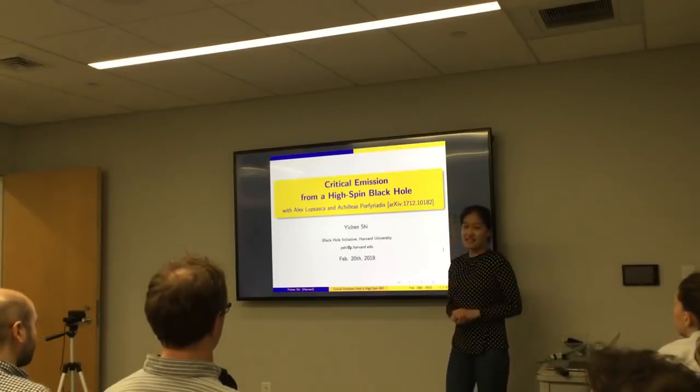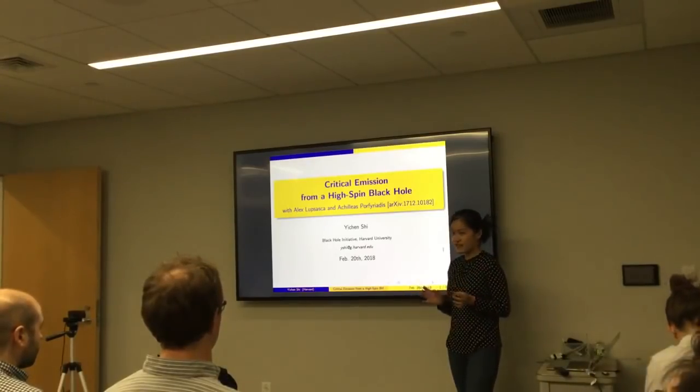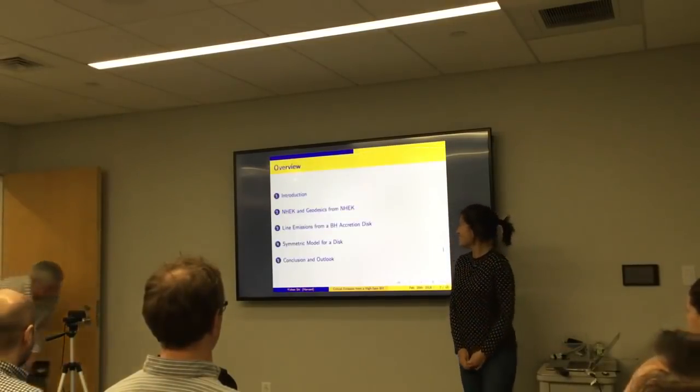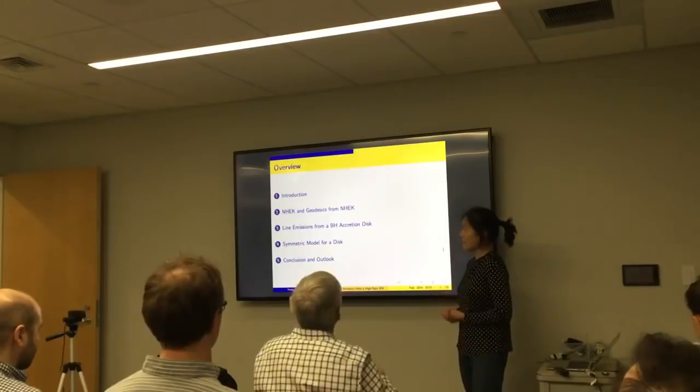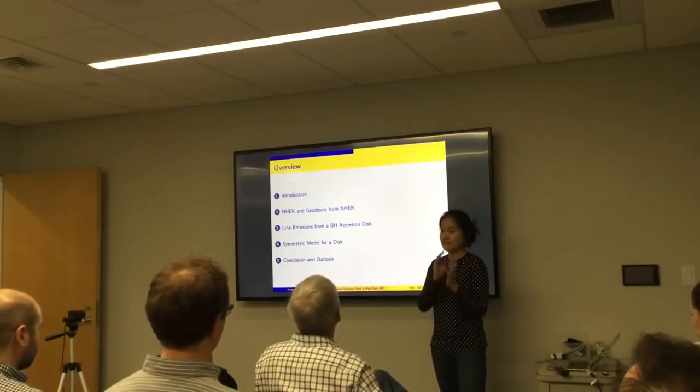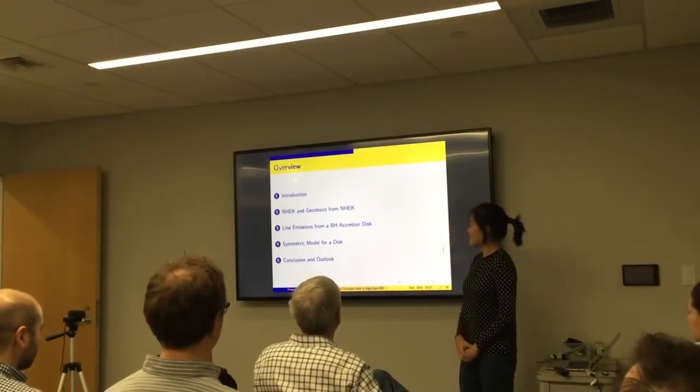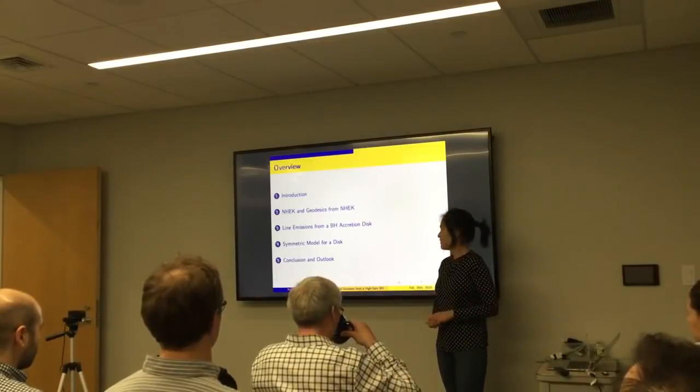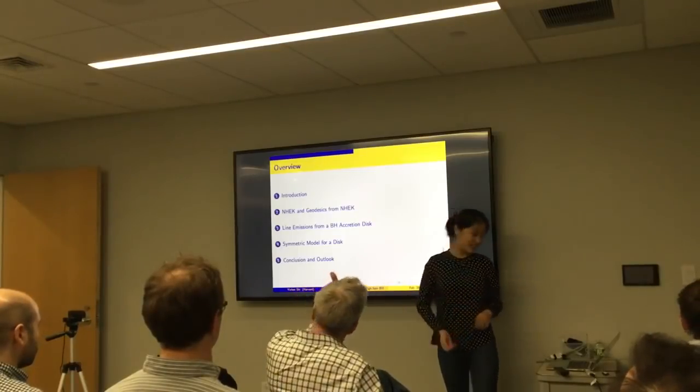In this work, we analytically compute the broadening of electromagnetic light emission from the innermost regions of accretion disks which surround high-spinning black holes. Here's an overview. I'll first give an introduction, then move to an overview of the near-horizon region of extreme Kerr black holes, as well as geodesics that originate from that region and reach a far observer. Then I'll move to the main part of the talk, which is on the line emission from a black hole accretion disk. Everything will be done analytically. Then I'll present a model for a disk which obeys symmetries in the neck region. And finally, I'll conclude.